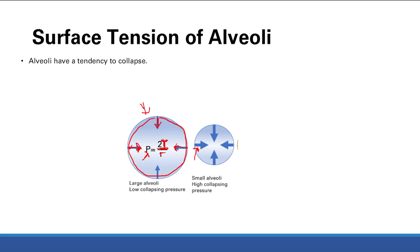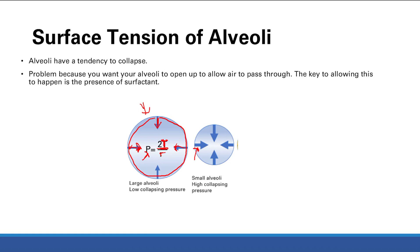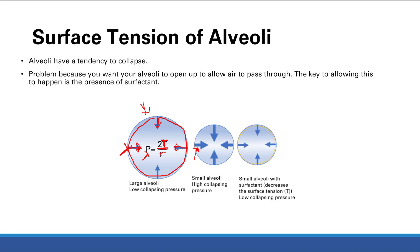This is a big problem because you want your alveoli to open up to allow air through. You need them to be bigger — that's why when you inhale you're opening up your alveoli. Too much collapsing pressure prevents that from happening. The solution is surfactant.